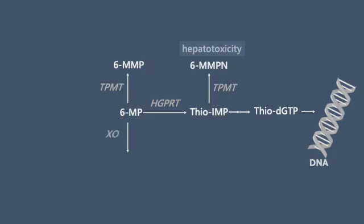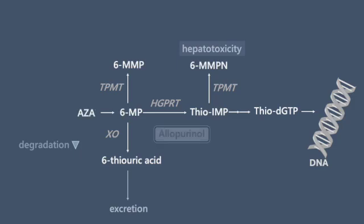Mercaptopurine is metabolized by xanthine oxidase. Allopurinol inhibits xanthine oxidase, leading to an elevation in plasma levels of 6-MP.